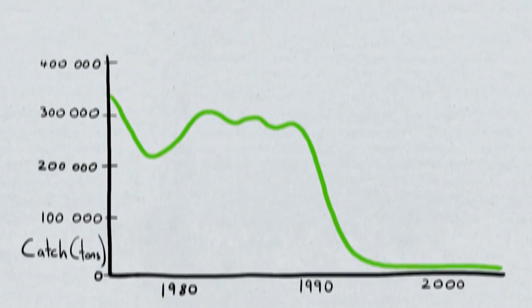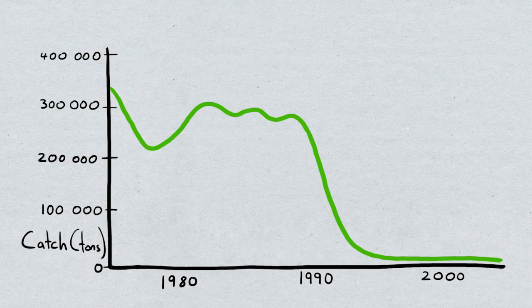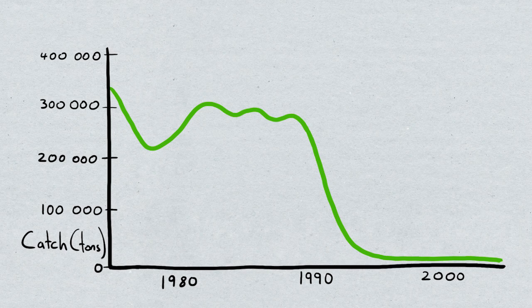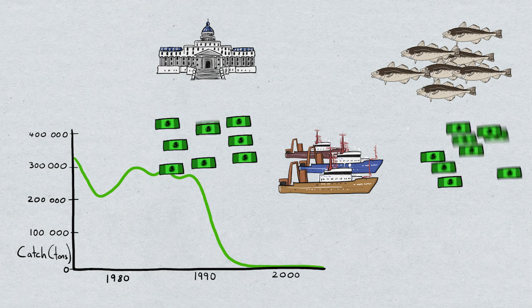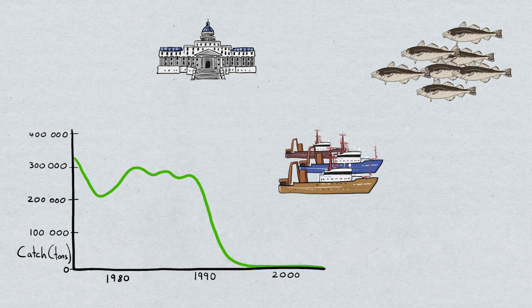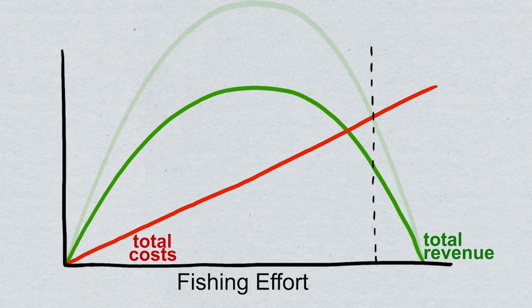For example, before the collapse of the cod population in the Grand Banks off the coast of Canada, one of the most productive fisheries in the world, the subsidies were to such an extent that they made up over half of the fishermen's total income. And it can be even worse than that in other fisheries. This is putting the wrong incentives on the fishermen.